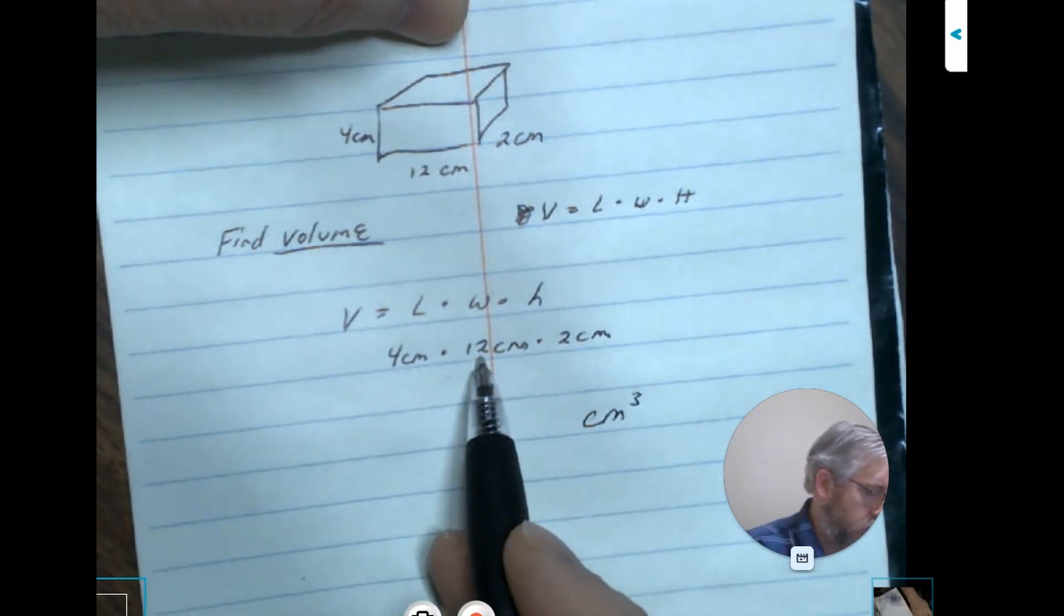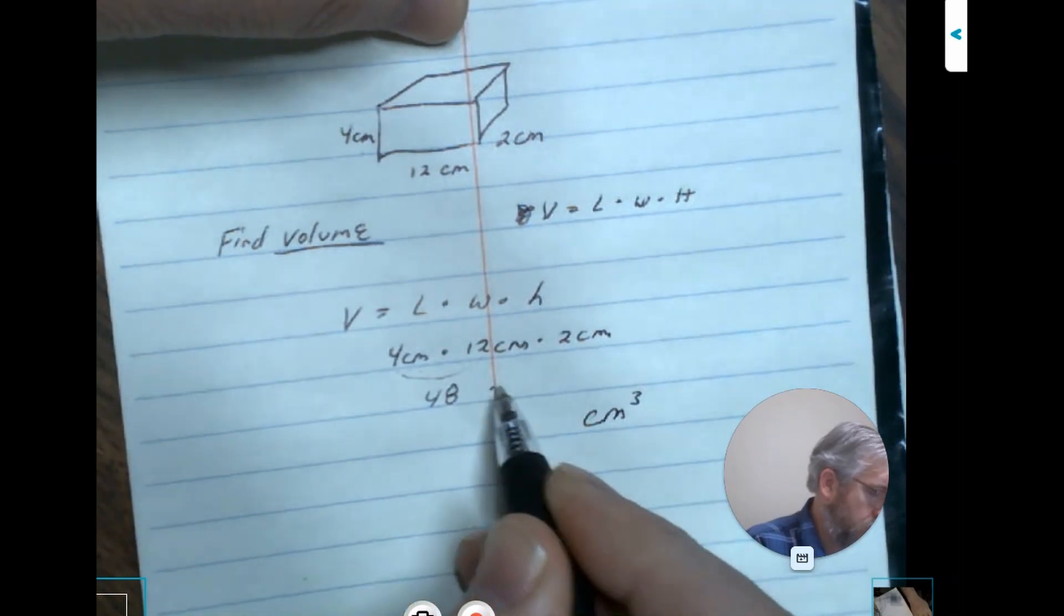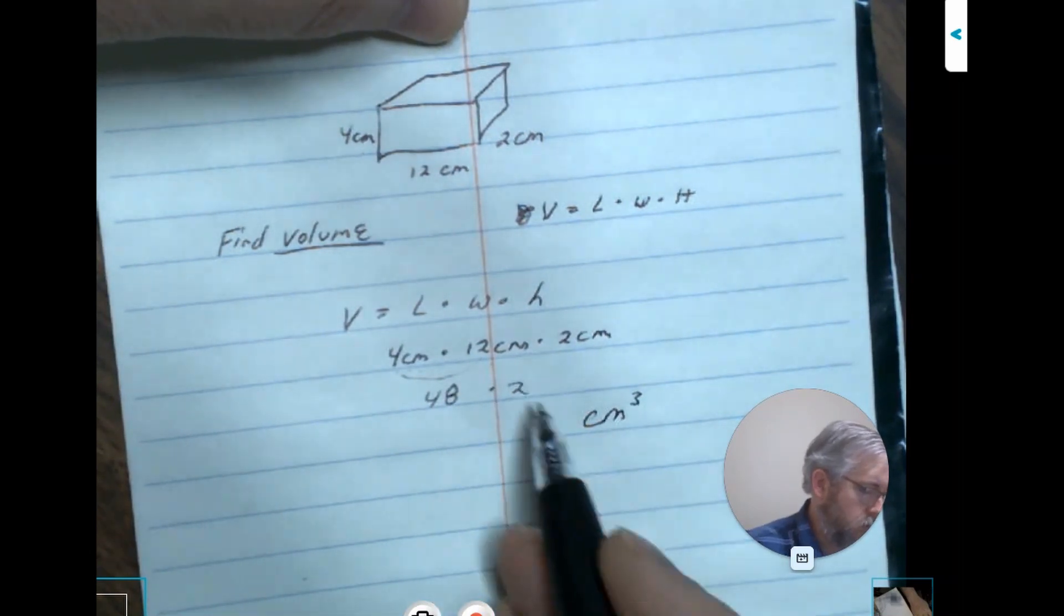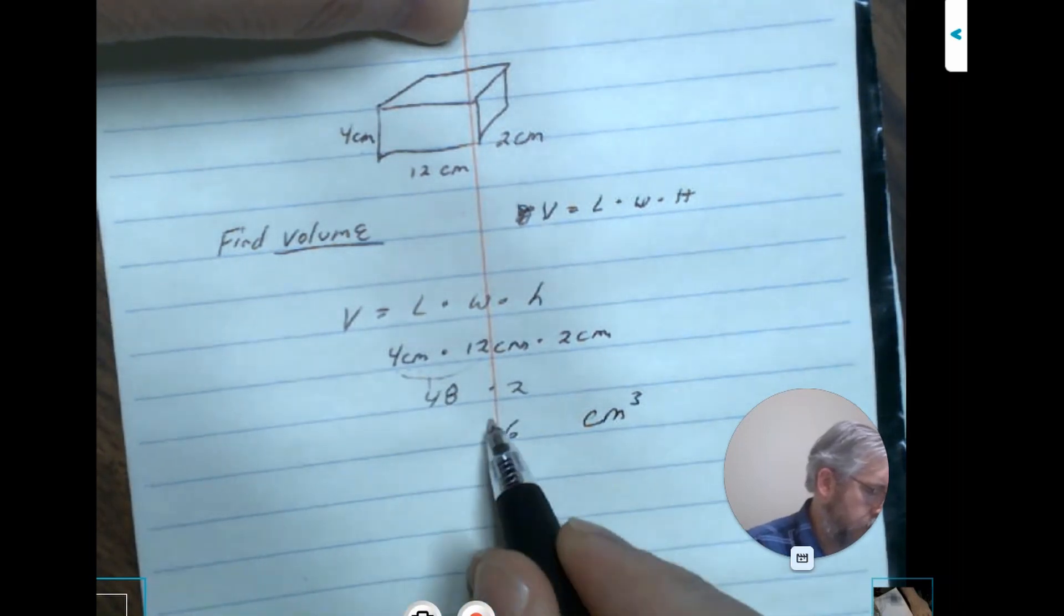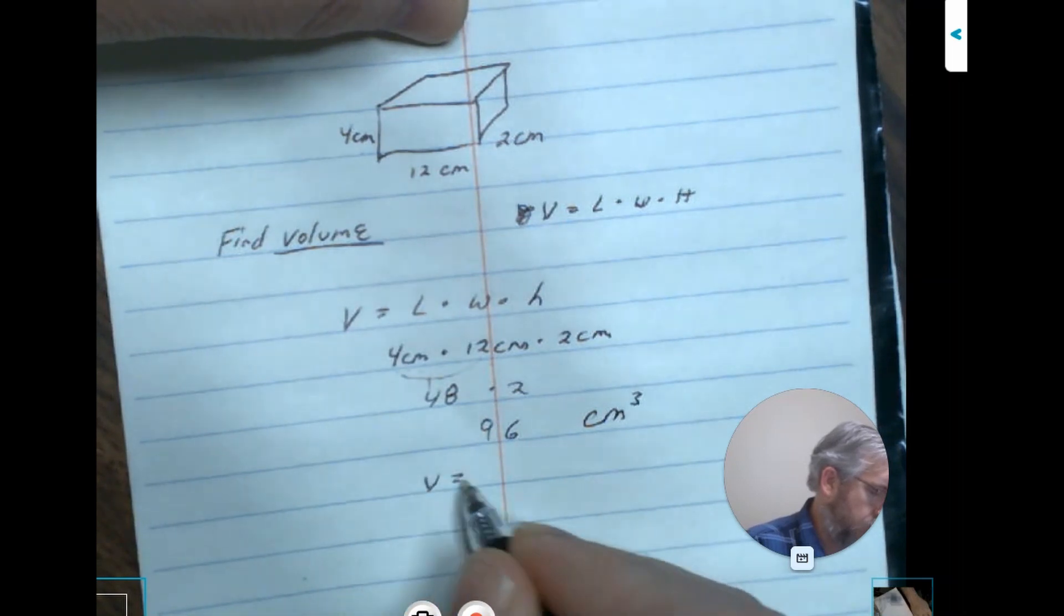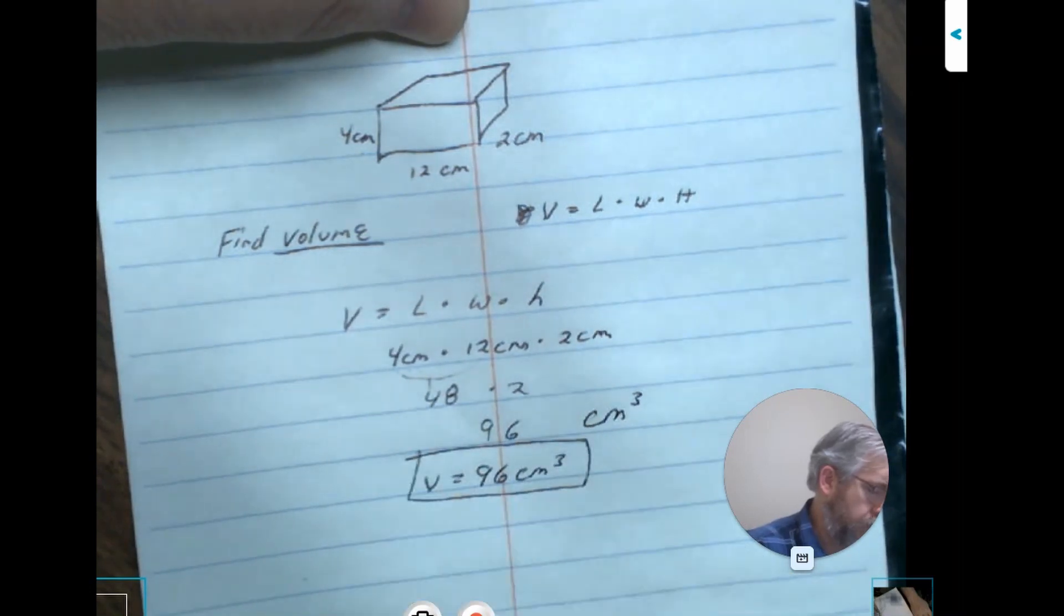Right, so 4 times 12 is going to be 48 times the 2. Two times 8 is 16, carry the 1, 8 and 9. So our volume is going to be 96 centimeters cubed, and that's going to be our answer for this particular project.